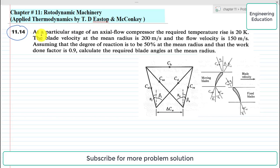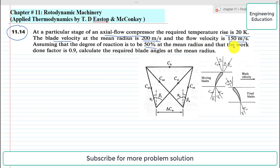The statement of the problem is: at a particular stage of an axial flow compressor, the required temperature rise is 20 Kelvin, the blade velocity at the mean radius is 200 meters per second, and the flow velocity is 150 meters per second. Assuming the degree of reaction is 50% at the mean radius and the work done factor is 0.9, calculate the required blade angles at the mean radius.